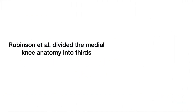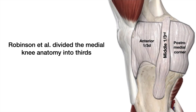Robinson et al. divided the medial knee into thirds: anterior third, medial third, and posterior third. From the diagram we can see this is the patellar tendon and this is the medial collateral ligament. The area between the medial border of the patellar tendon and anterior border of the MCL is the anterior third; the area covering the MCL is the medial third; and the area posterior to the MCL and touching the medial head of the gastrocnemius muscle is the posteromedial corner.